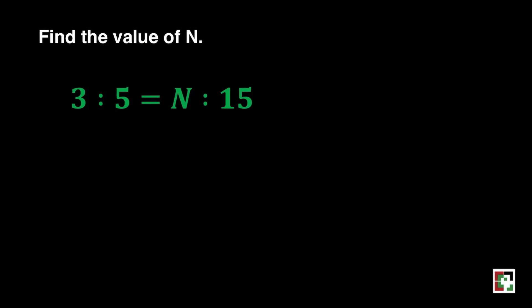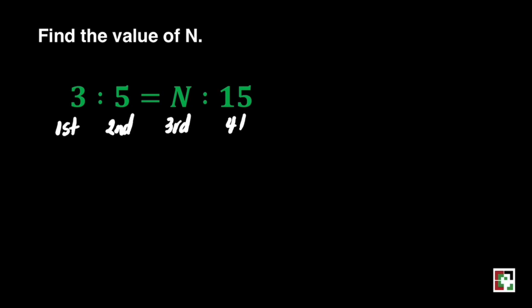Let's have the first example. 3 is to 5 is equal to n is to 15. How to find n? We will just need to identify the terms of this ratio. This is the first term, second term, third term, and fourth term.